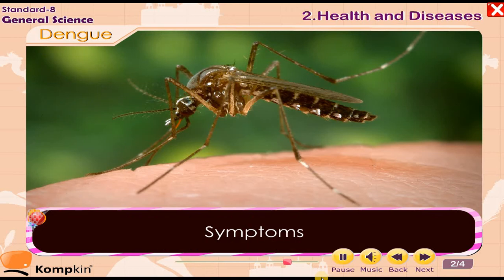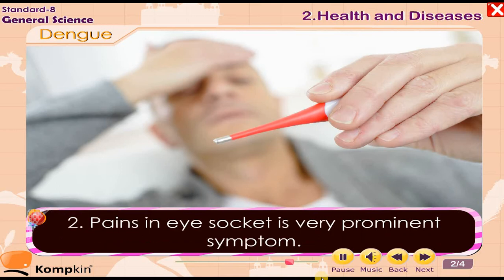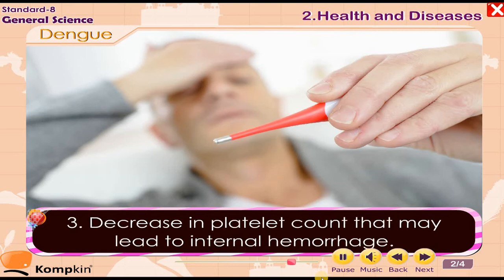Symptoms of Dengue: 1. Acute fever and headache, vomiting. 2. Pains in the eye socket — a very prominent symptom. 3. Decrease in platelet count that may lead to internal hemorrhage.